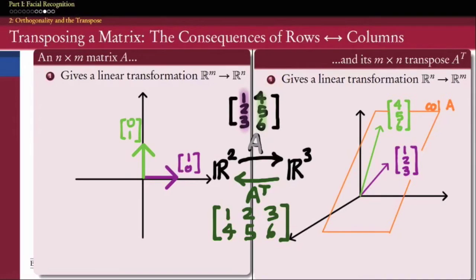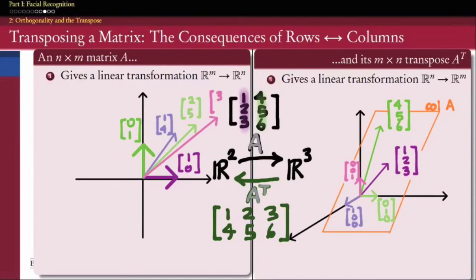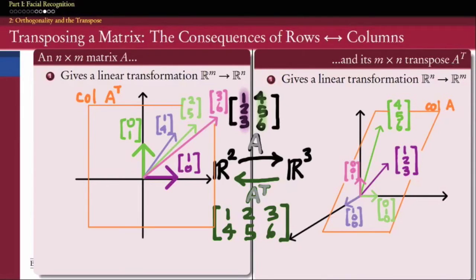Similarly, the columns of A transpose tell us the images of the standard basis vectors in R3. Multiplying A transpose by each standard basis vector gives the columns of A transpose. The set of all linear combinations of those images is the column space of A transpose, which in this case is a two-dimensional plane covering all of R2. Because the columns of A are the rows of A transpose and vice versa, the column space of A transpose is also known as the row space of A.